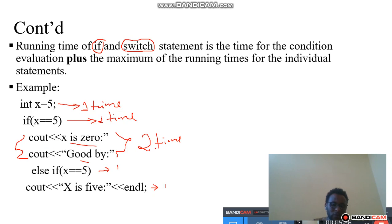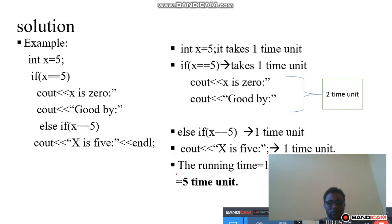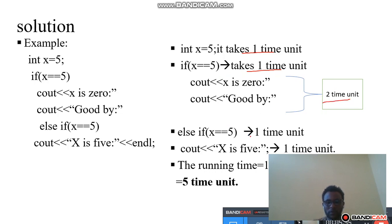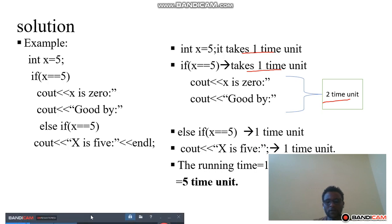The maximum of the running times of the individual statements — the maximum is two time units. So the running time is: one (assignment operator) plus one (condition) plus the maximum of the individual clauses. That gives us one plus one plus one plus two plus one, which is equal to five time units.